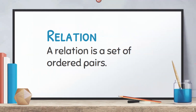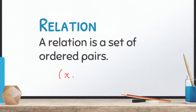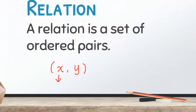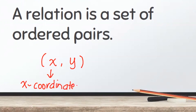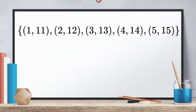Let us define first the relation. Relation is a set of ordered pairs. Recall that an ordered pair is a pair of numbers wherein the first number is called the x-coordinate and the second number is called the y-coordinate. In this example of relation, we have five ordered pairs: 1, 2, 3, 4, and 5. Notice that the x-coordinates are 1, 2, 3, 4, and 5.